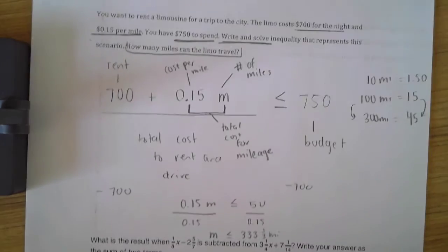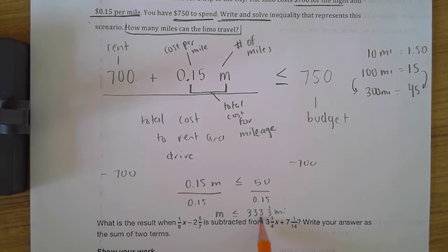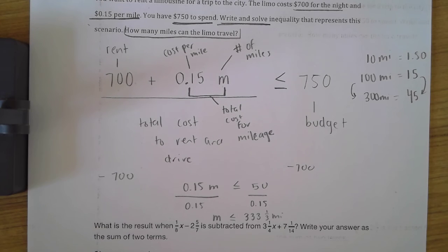When I travel 333 and one-third miles, that is going to cost me $50. When you add that to the $700 it costs, the flat fee of renting the limousine, then that means that it's $750. I cannot go over that 333 and one-third mile limit because then I will not have enough money in my budget.